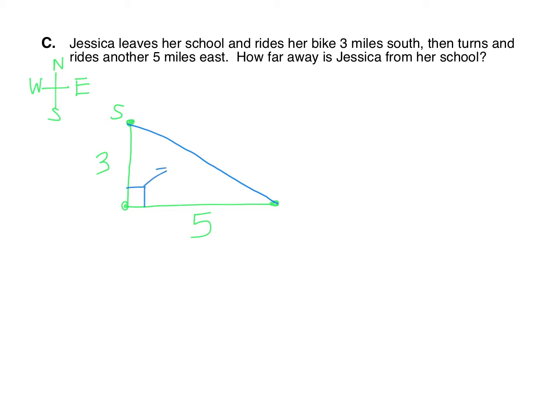And the missing side, how far she is away from the school, is the C. The other two sides are A and B. So going to our Pythagorean theorem, we have three squared plus five squared equals C squared. So nine plus 25 equals C squared.